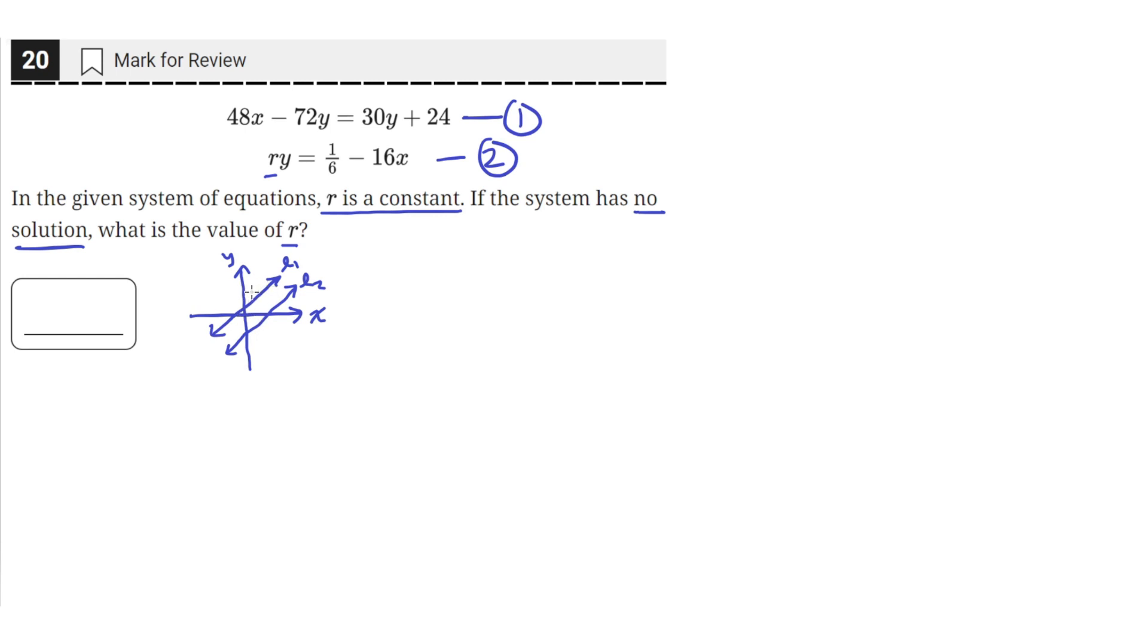So we need to make sure that these two lines, after we plug in the value of r, we need to find a value of r such that the slopes are the same on these two lines, so that they never intersect, meaning there's no solution.